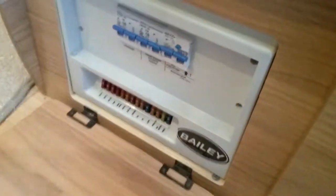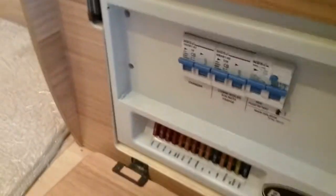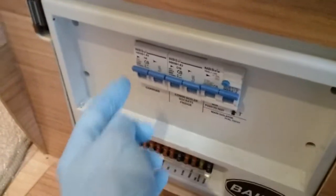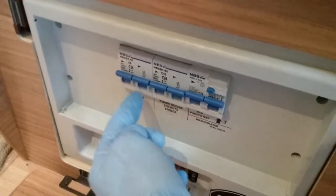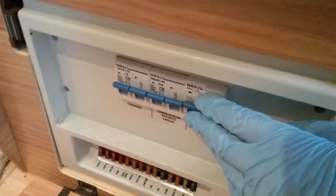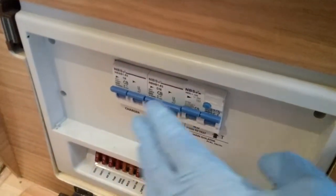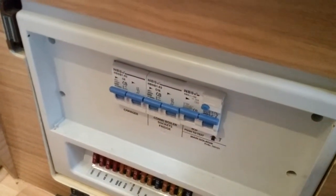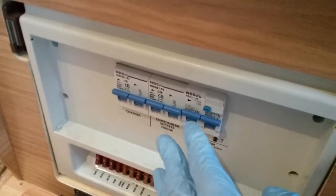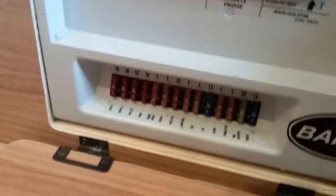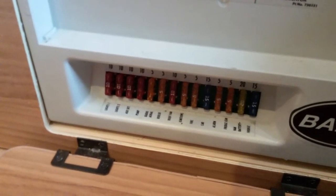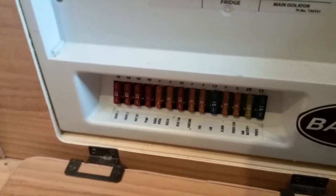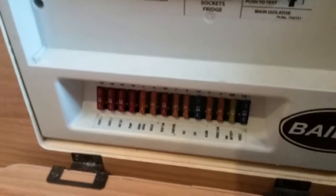The consumer unit just sits here. So along the top here we have the individual MCBs. You can see they are labelled, and then we have the main RCD and test button just here. So if anything is not working on main supply, just check to see whether you have tripped. And then beneath that are the 12V fuses. Again they are all labelled up, so if anything is not working on 12V just check to see if a fuse has blown.